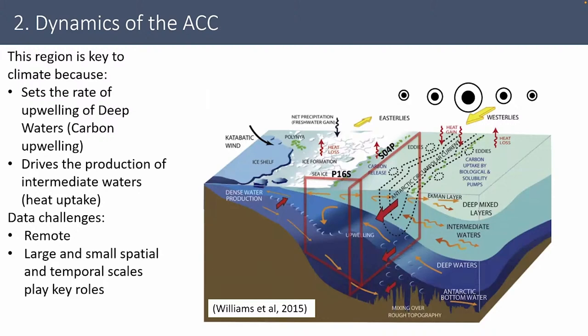The data challenges here are that it's a very coupled system, a harsh environment, and the dynamics are very complicated. The second region I want to introduce is the dynamics across the ACC. In the Southern Ocean we have one of the strongest currents in the world that goes all the way around the continent. The dynamics are primarily driven by wind-driven circulation — the yellow arrows on the top — and the meridional variation in wind strength drives convergence and downwelling.